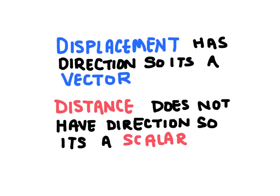Now, displacement includes a direction, and so we call this measurement a vector. Measurements that include directions are called vectors. Distance doesn't include a direction, and so it's called a scalar.